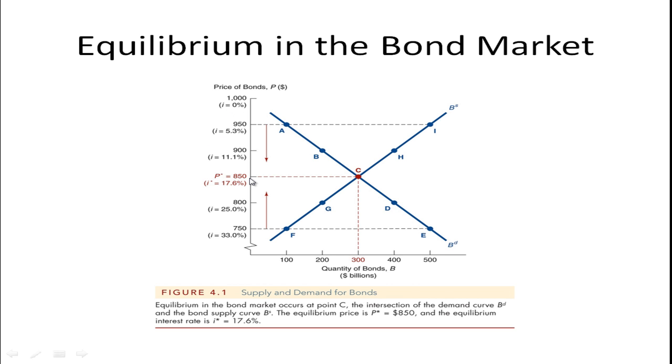Keep in mind that interest rates and bond prices are inversely related. A higher interest rate corresponds to a lower bond price. An interest rate of zero corresponds to a bond price of $1,000, but an interest rate of 17.6% corresponds to a bond price of $850. You can work this out using the equation we gave before.